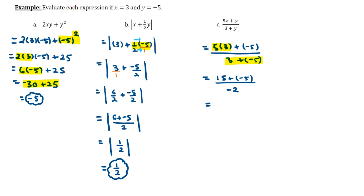Now what you can do is combine the top right there. 15 plus negative 5 which is positive 10 all over negative 2. And when we divide 10 by negative 2 we get negative 5. And so our final answer to part C is negative 5.